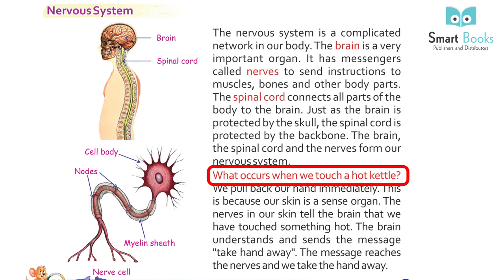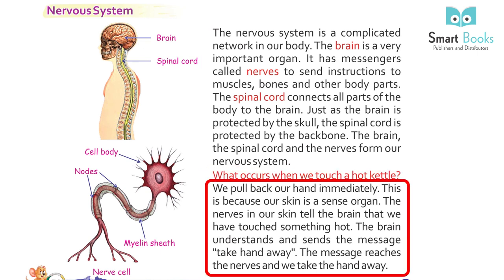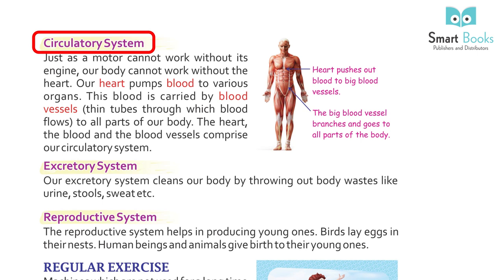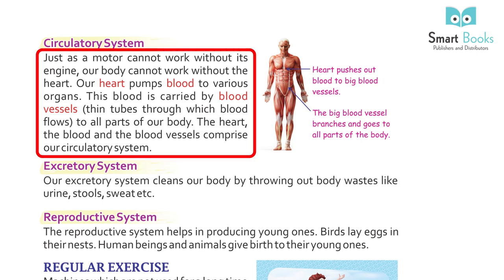The brain, the spinal cord, and the nerves form our nervous system. When we touch a hot kettle, we pull back our hand immediately. This is because our skin is a sense organ – the nerves in our skin tell the brain that we have touched something hot. The brain sends the message 'take hand away,' the message travels along the nerves, and we take the hand away.